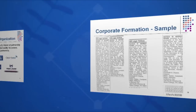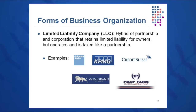Other forms of business organization include new and evolving forms such as the limited liability company, which has a blend of the attributes of the corporation and the partnership. It has the limited liability of the corporation and the taxation advantage of the partnership. One key disadvantage of the corporation is double taxation — pre-tax income is taxed once, and then if the corporation pays dividends, the shareholder is taxed again. That's what we mean by the disadvantage of double taxation.